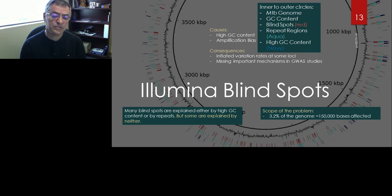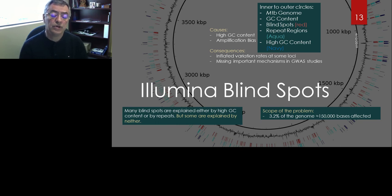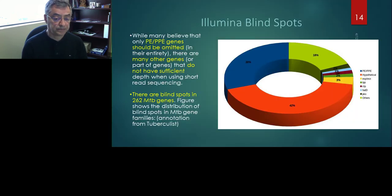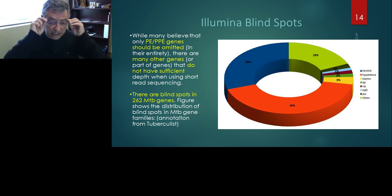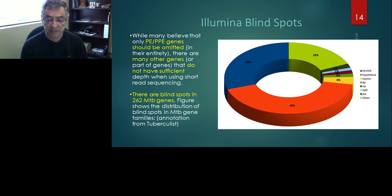We used several thousand publicly available Illumina genomes to discover these blind spots — therefore these are common problems with the platform. Functionally, they scatter across multiple functional domains. The largest group is the PE and PPE genes, which interact with the host immune system and represent the primary defense mechanism of the pathogen. These are mostly unknown genes whose functions are not fully clear. Unfortunately, these blind spots seem to be concentrated among these genes — perhaps one reason why they are not well studied.